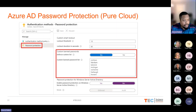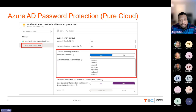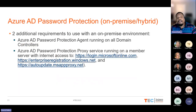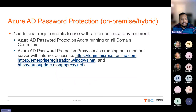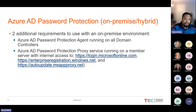This protection is in addition to whatever password policies you already have in place. What's cool is you can use Azure AD Password Protection in an on-premise environment if you have a hybrid setup. Two additional requirements: an Azure AD Password Protection agent running on all your domain controllers, and an Azure AD Password Protection proxy service running on a member server with internet access — only three URLs need to be accessible.